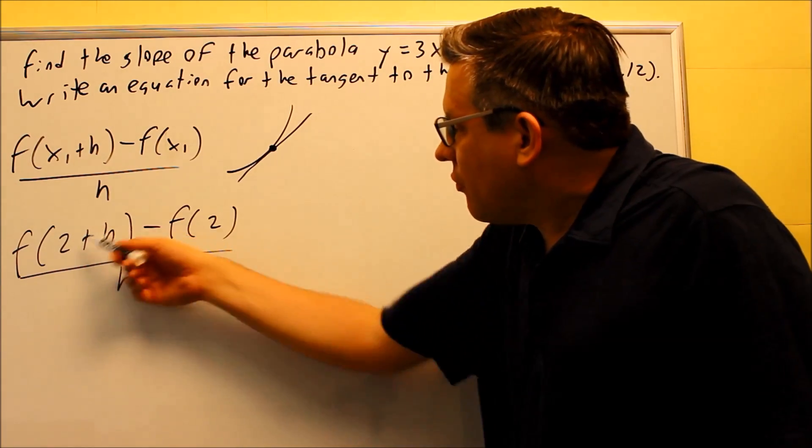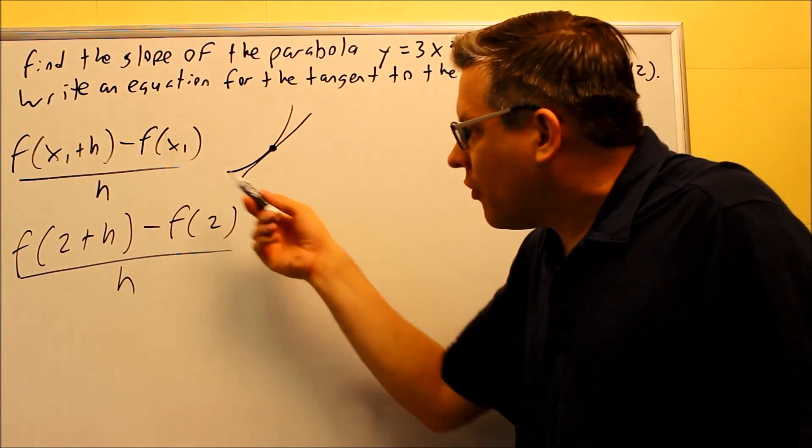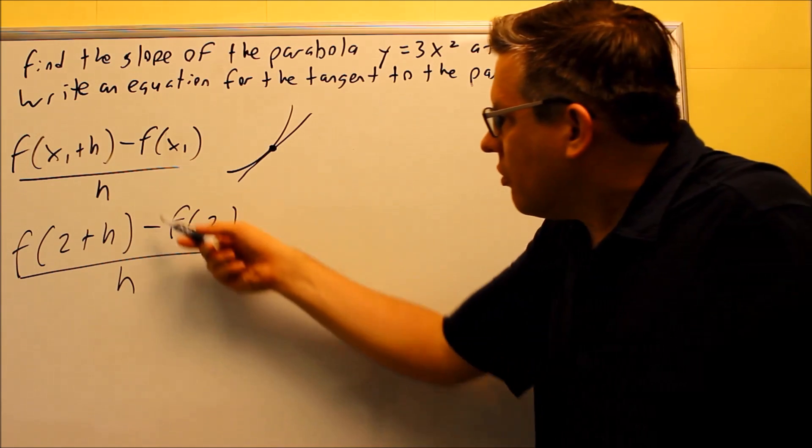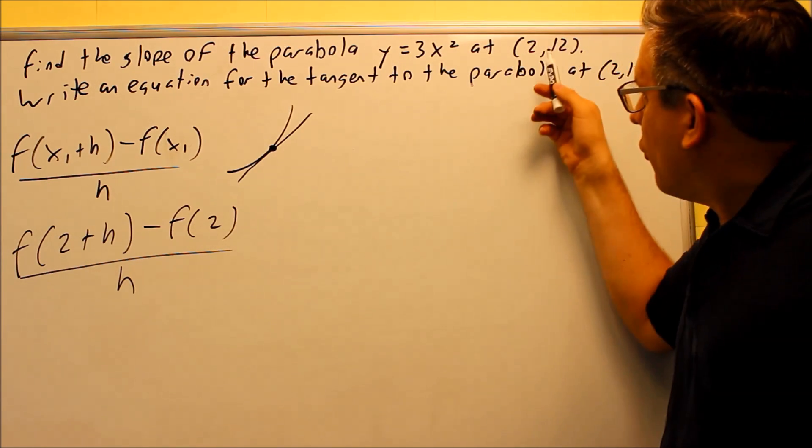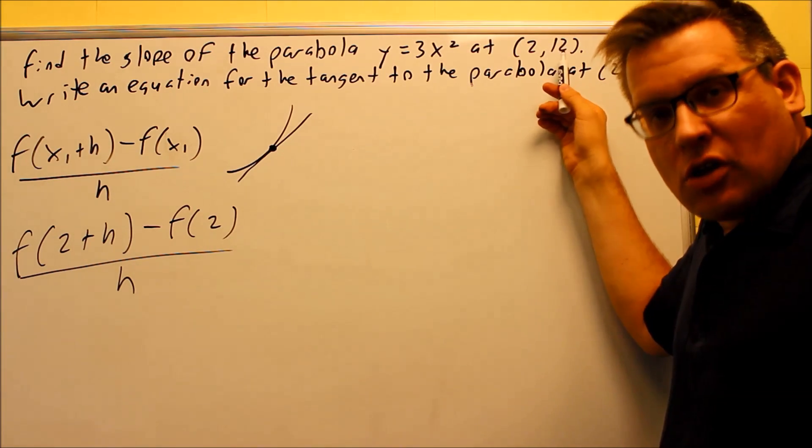So I need to find two things: f of 2 plus h, and I need to find f of 2. Now f of 2 has already been provided for us. That's actually going to be 12.